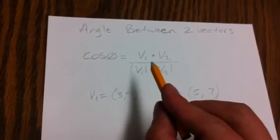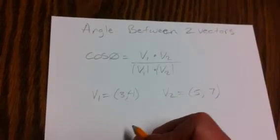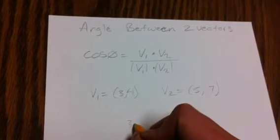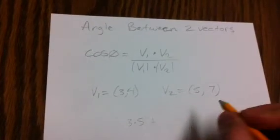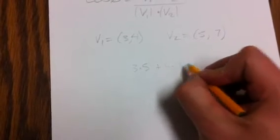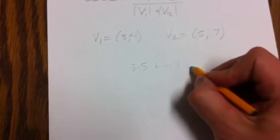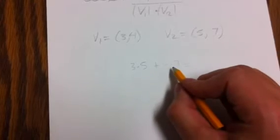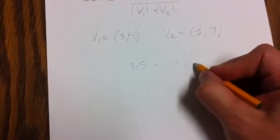So to find the dot product on the top, we're going to simply multiply the x components together, so 3 times 5, and add that to the y components multiplied together, which is 4 times 7. So this is 15 plus 28, which equals 43.